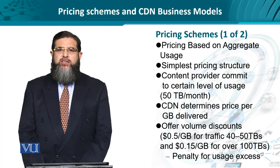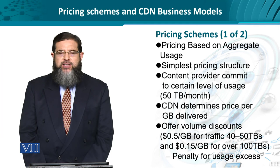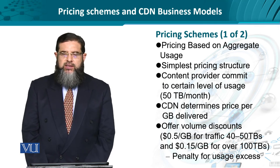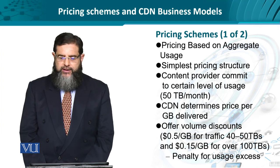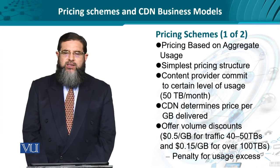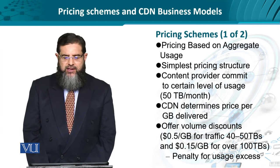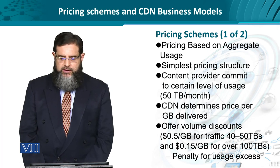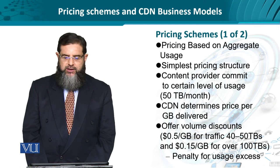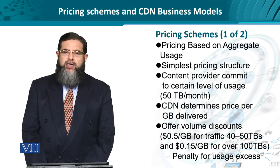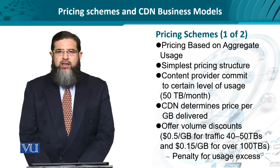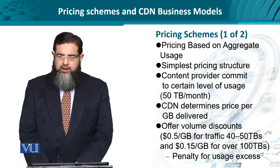Let's look at a very basic form of pricing schemes. Pricing schemes can be as simple as aggregate usage, measured in megabytes or volume. For instance, 50 terabytes per month — if that is the agreement between the content provider and CDN, then the CDN can charge the content provider per gigabyte delivered. It could be as low as the megabyte level, but it is normally amortized at the gigabyte level.